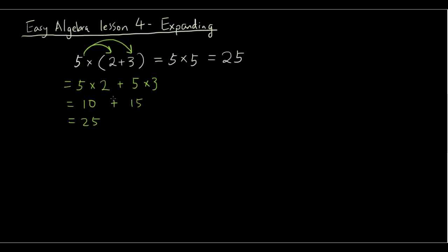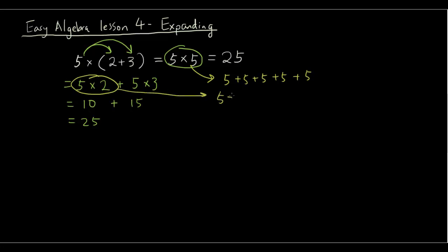How is this possible? It makes sense because 5 times 5 is the same as 5 plus 5 plus 5 plus 5 plus 5. And 5 times 2 is the same as 5 plus 5, while 5 times 3 is the same as 5 plus 5 plus 5. So when we have a plus in the middle and add them together, it's exactly the same as 5 times 5. That's why this technique works.